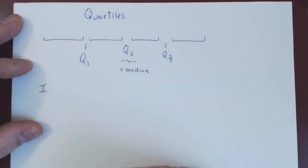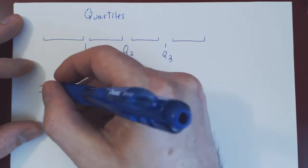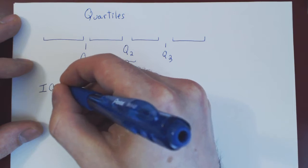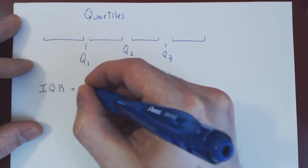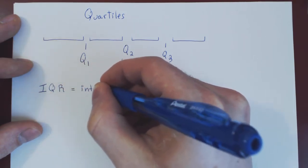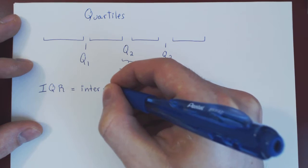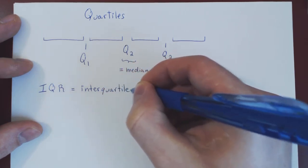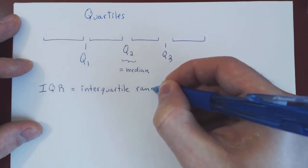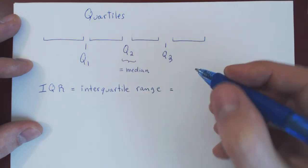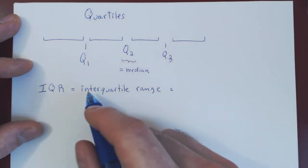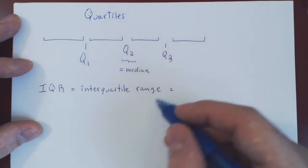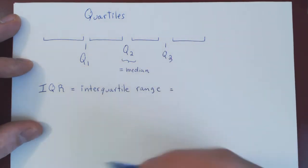There is also a simple definition called the IQR — the interquartile range — where I stands for inter, Q for quartile, and R for range. The name gives it away: it is the range between our quartiles, so it is Q3 minus Q1.